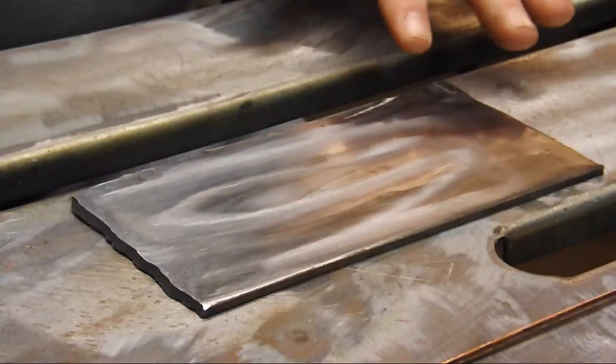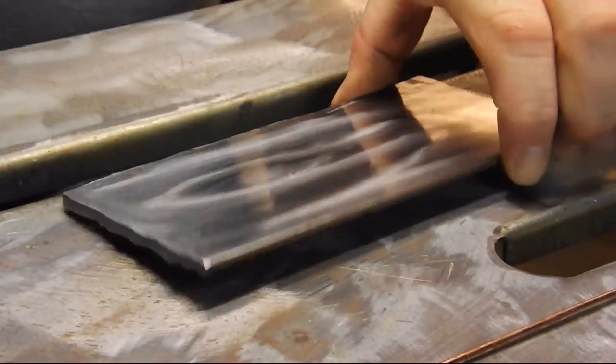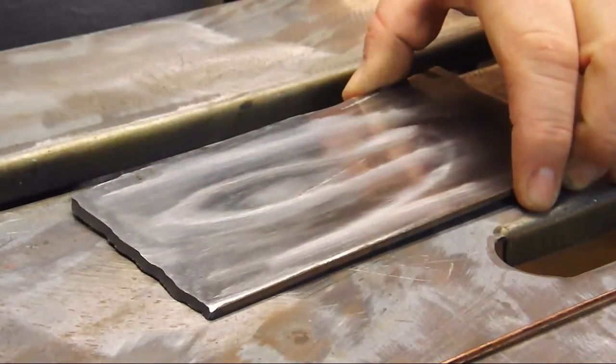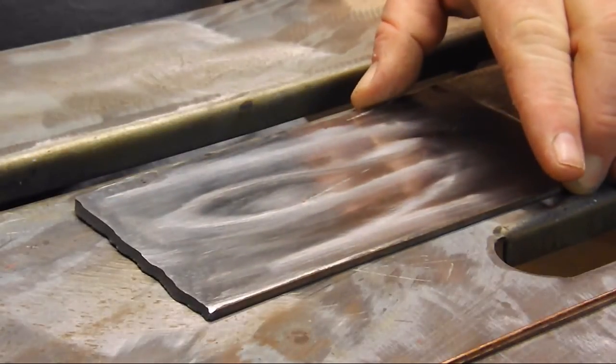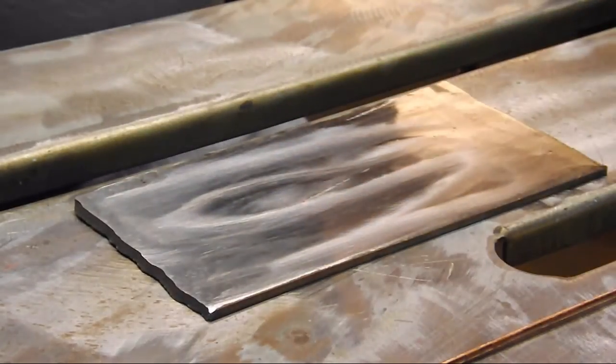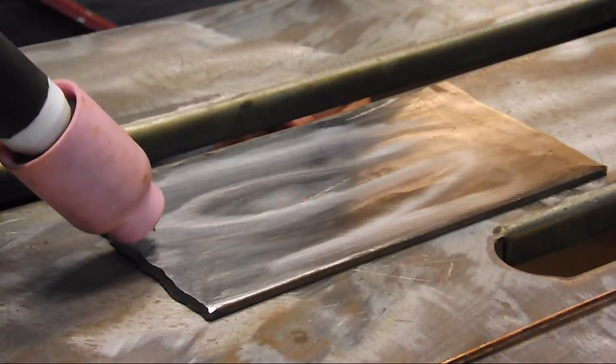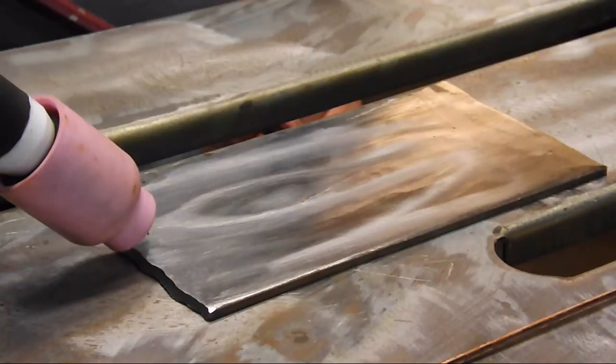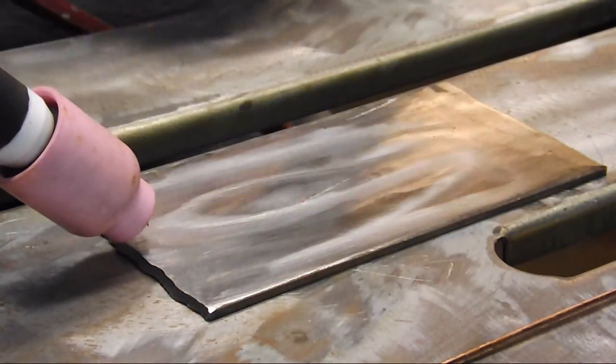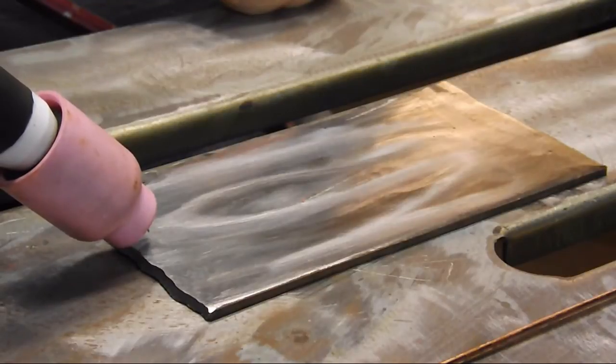All right, first of all, here's our piece of 1018 mild steel. This is 1/8 inch thick, or 125 thousandths. And when we weld, we want to talk about keeping a tight arc length. And when you're welding, there's always going to be an air gap, and that's your arc length.